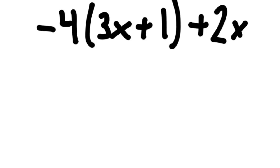The last one we're going to look at is -4 times the quantity (3x + 1) + 2x. It's two terms: the parentheses is going to be one, and then the 2x is the other.